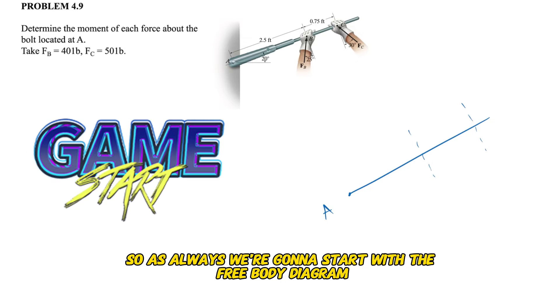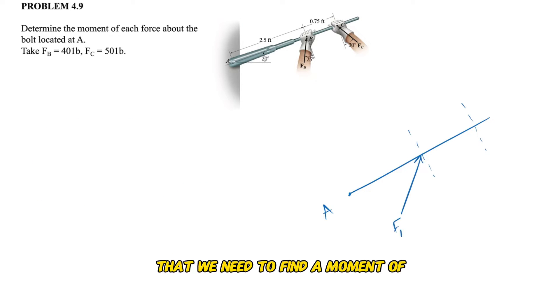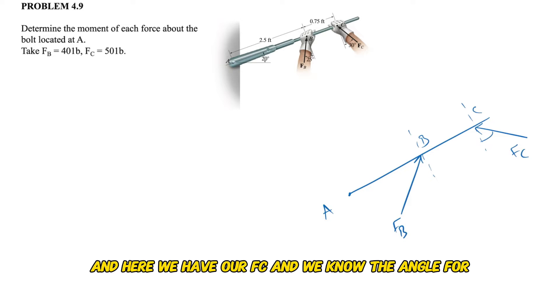So as always we're going to start with the free body diagram. We have here the point A that we need to find the moment of each of these two forces about, and this one is our Fb and here we have our Fc.